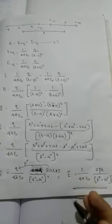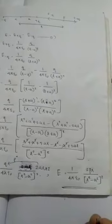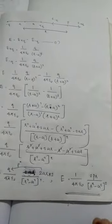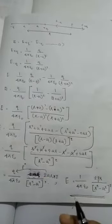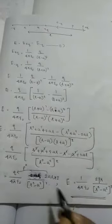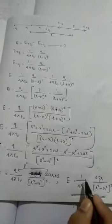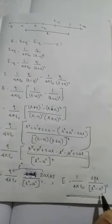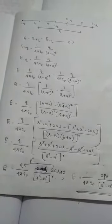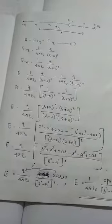That means electric dipole moment p equals 2a into q, where 2a is the separating distance and q is the magnitude of charge. Therefore E equals 1 by 4 pi epsilon-0 times 2pr divided by (r squared minus a squared) squared. This is the electric field due to the dipole on the axial line.